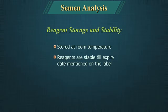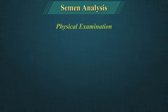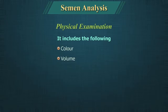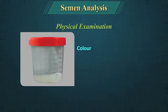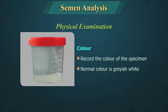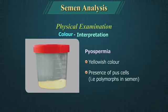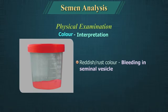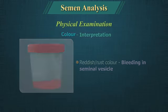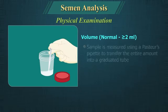Physical examination of semen includes color, volume, liquefaction time, and viscosity. Color: Record the color of the specimen. Normal color is grayish white. A yellowish color may indicate pyospermia, and a reddish or rust color may indicate bleeding in the seminal vesicle.